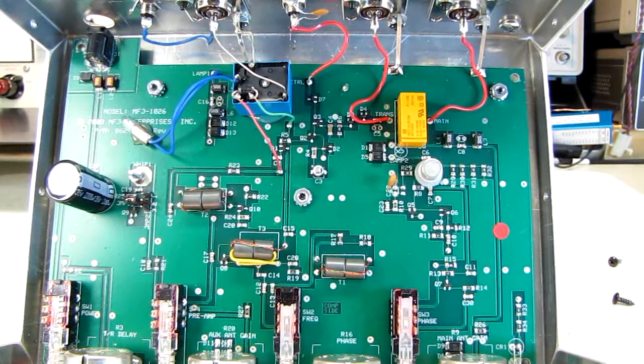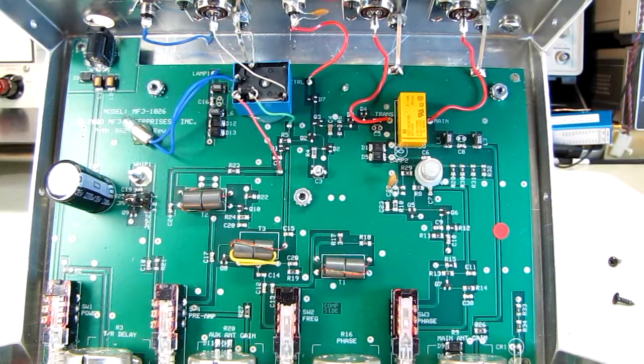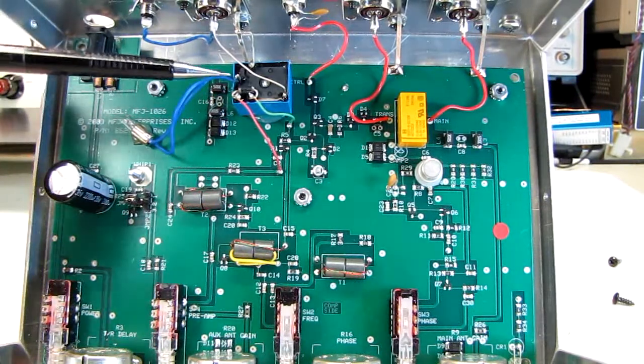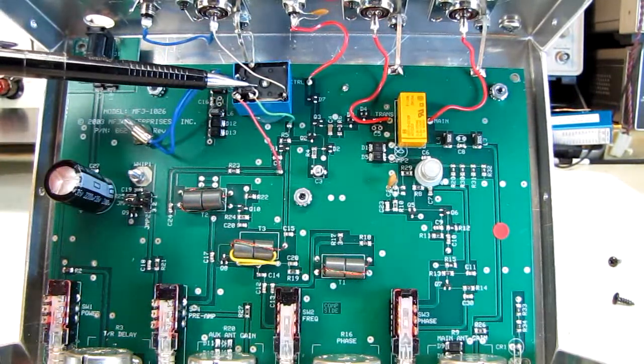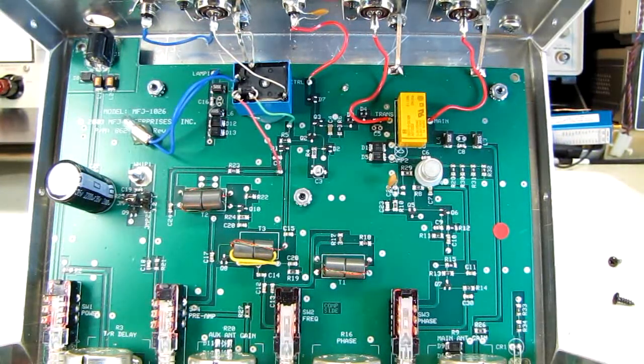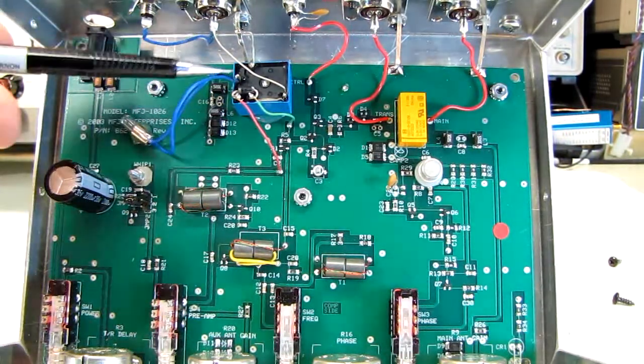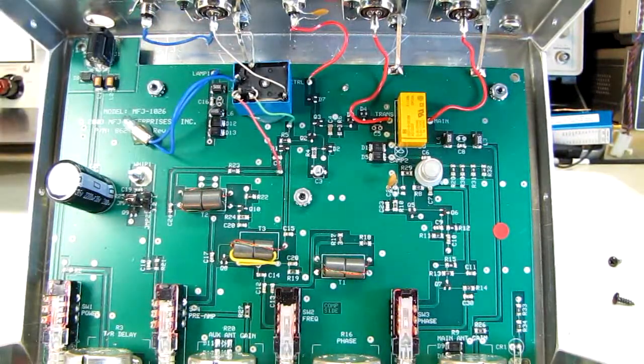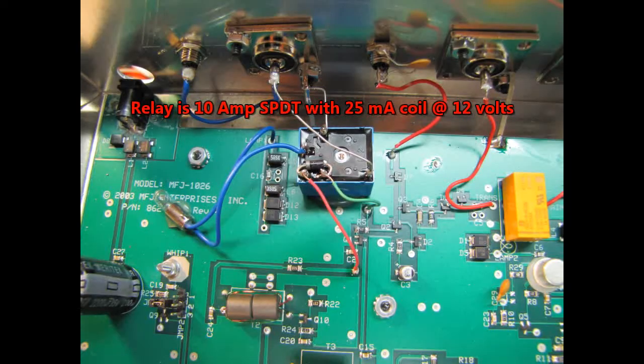The coil current on that relay is 16 milliamps, actually 16.7 milliamps. The relay I selected to ground the line for the antenna has 25 milliamps. So 25 and 16, I'm not even at 50 milliamps, and the transistor is rated for 300.